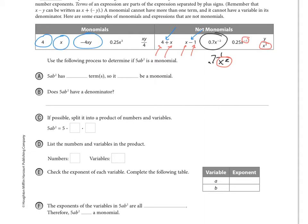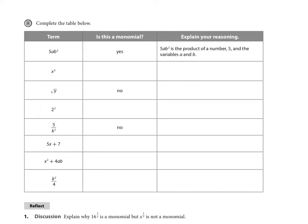Does 5ab² have a denominator? Yes — a denominator of one. We just don't write the one; there are things implied even though we don't write them. This term can be split into 5 times a times b squared — these are the factors of the term. Every monomial has factors unless it is just a constant. For example, x has factors: there is an implied one, so its factors are one and x.